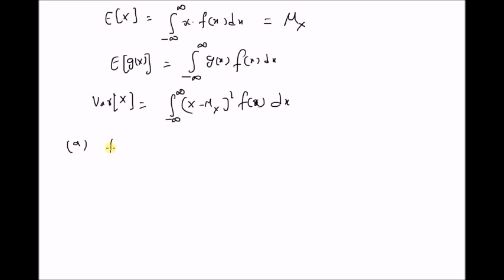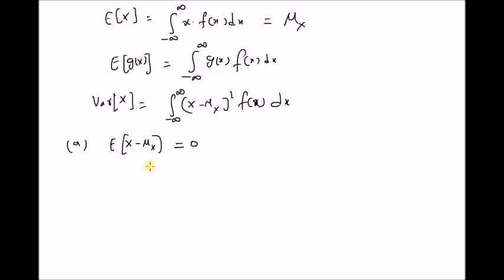The first property is the expected value of the random variable centralized with its mean — that is, the expected value of (X minus μx) is equal to 0. This can be easily proved by using the definition of the expectation of a function.